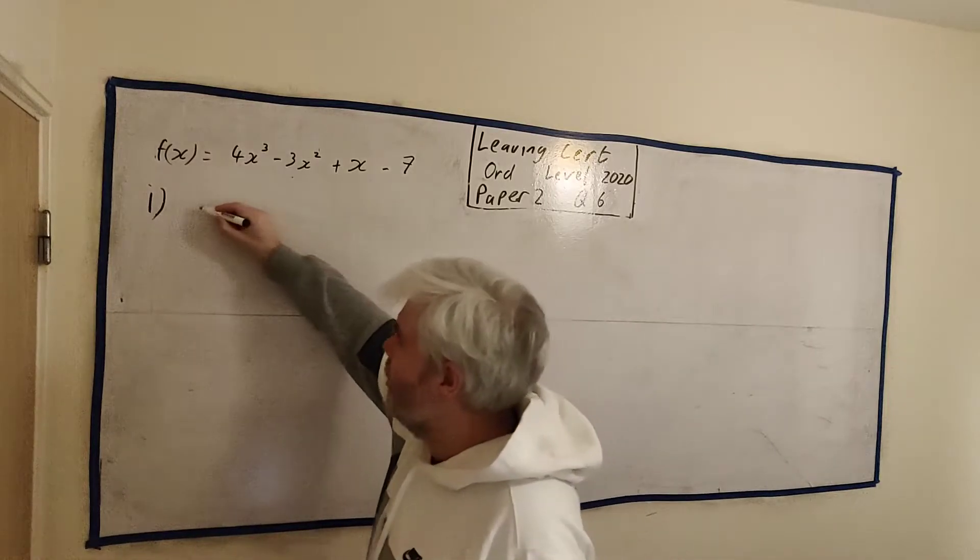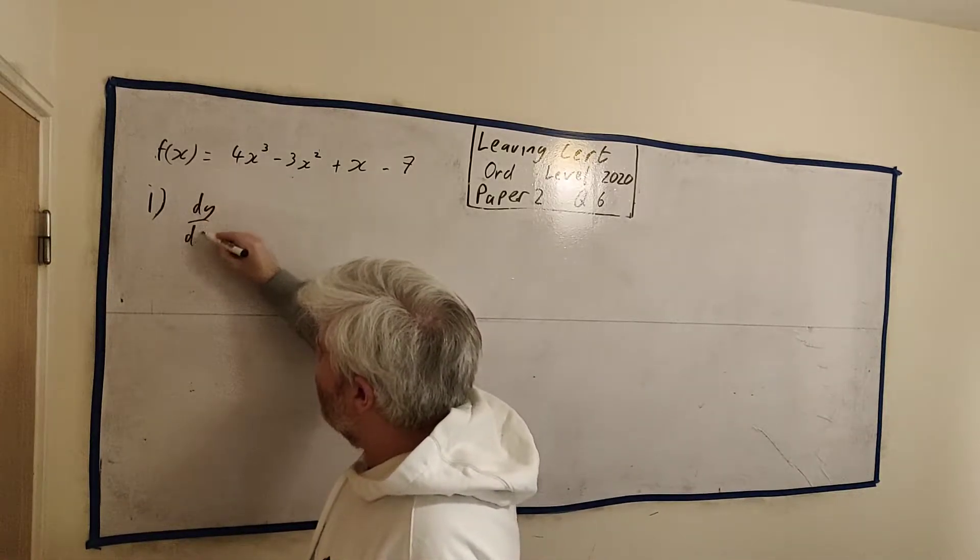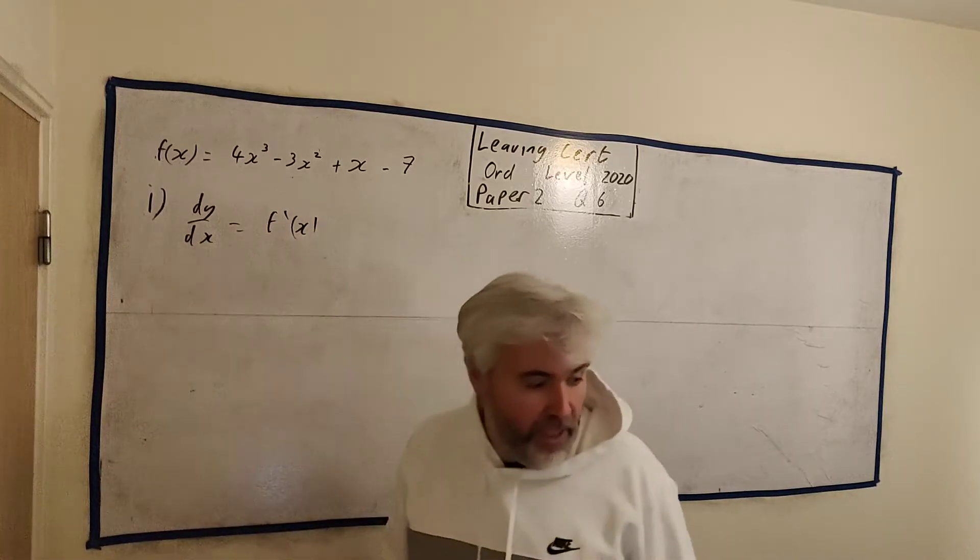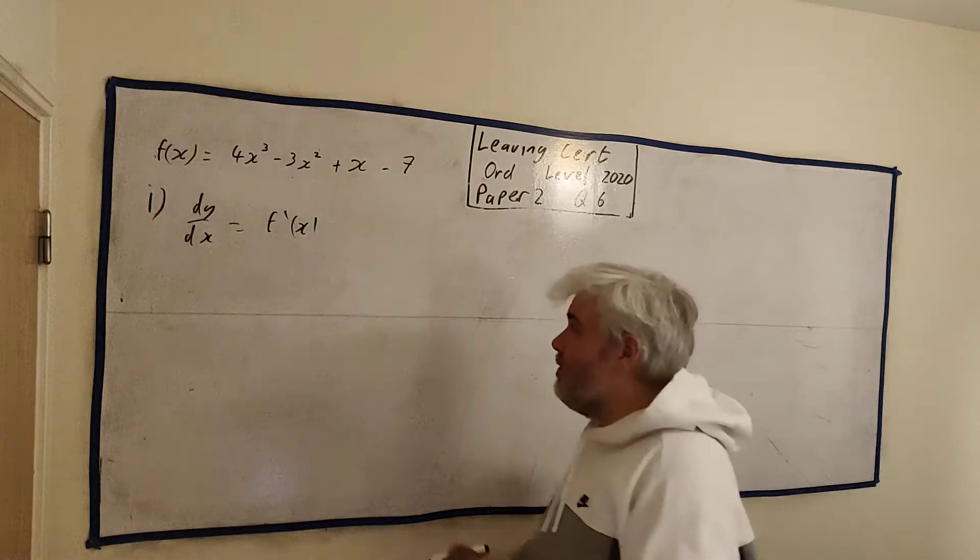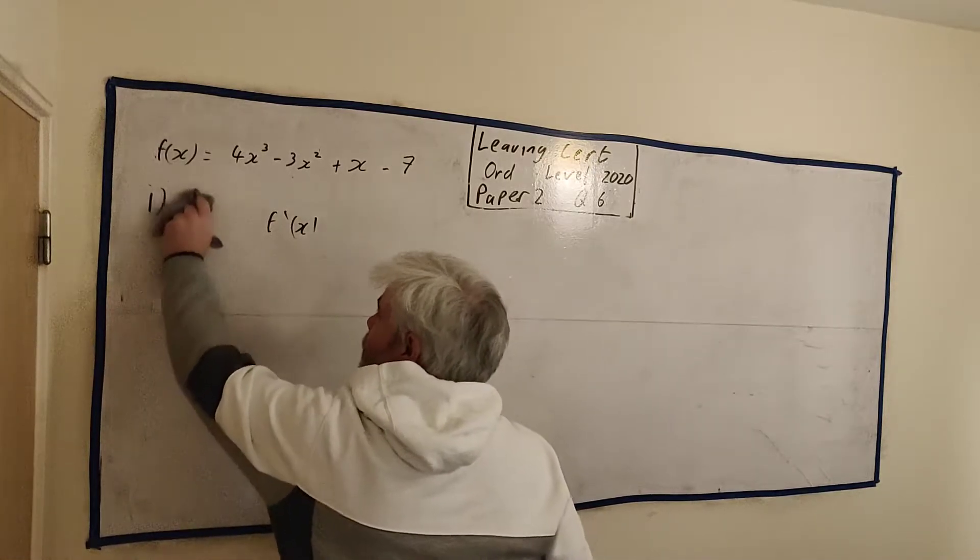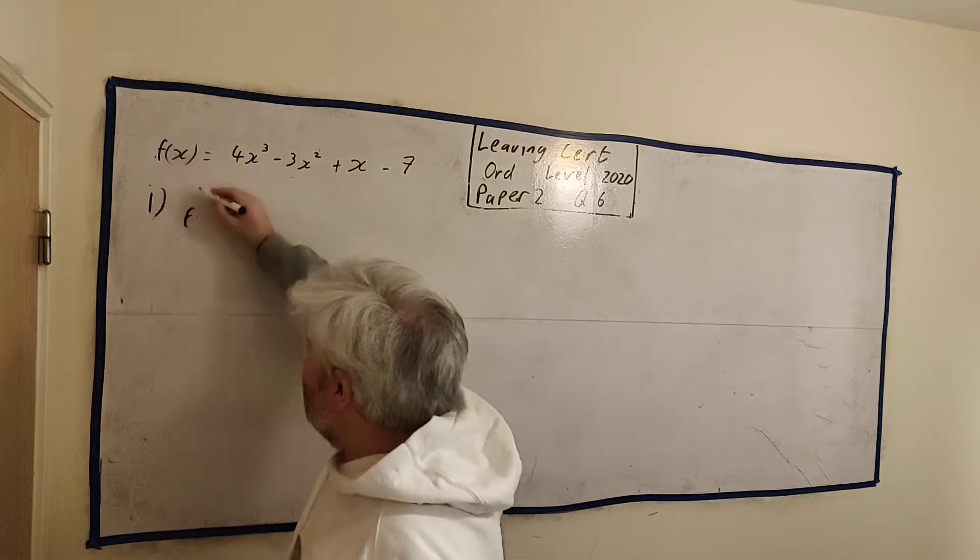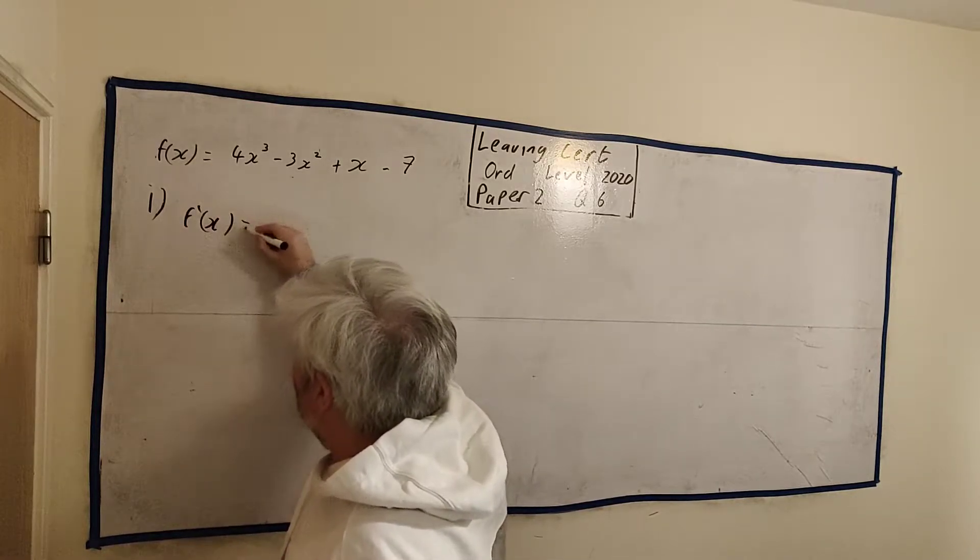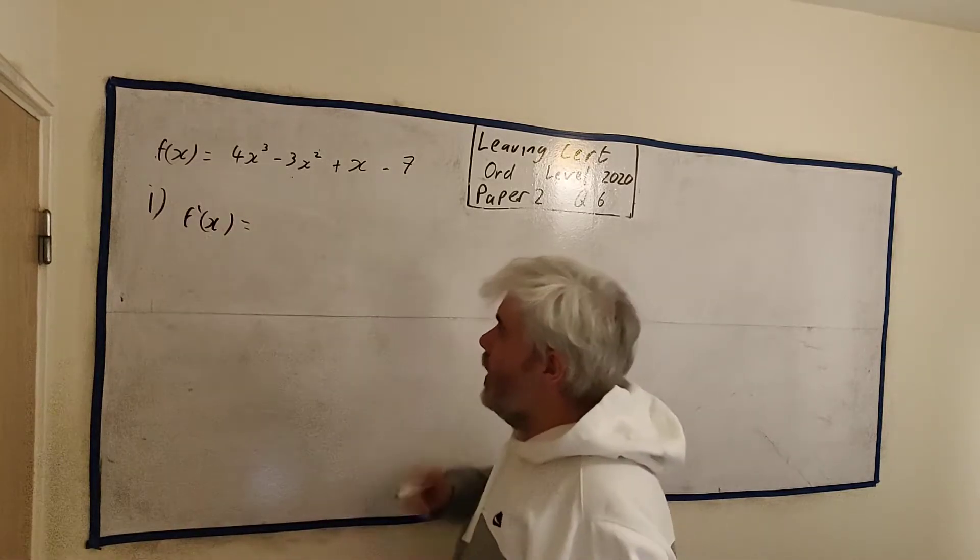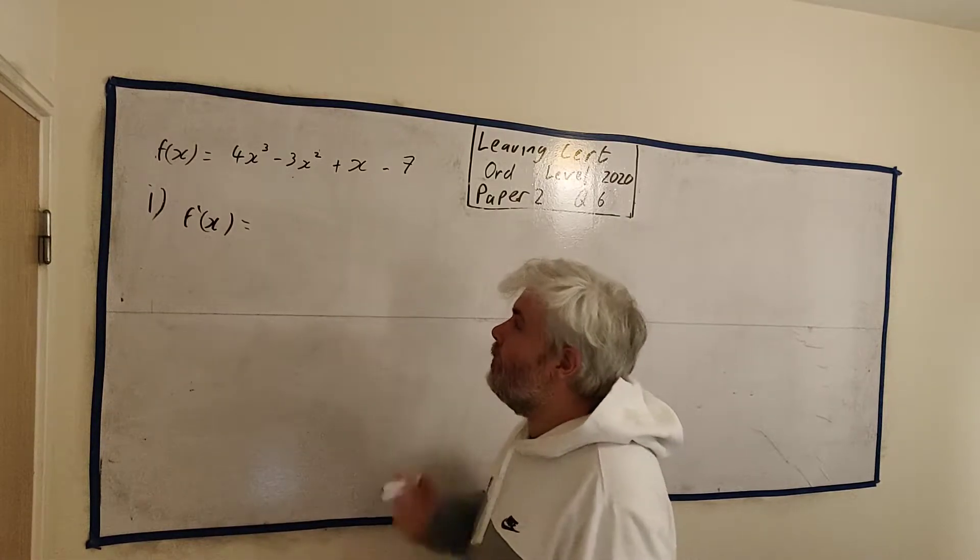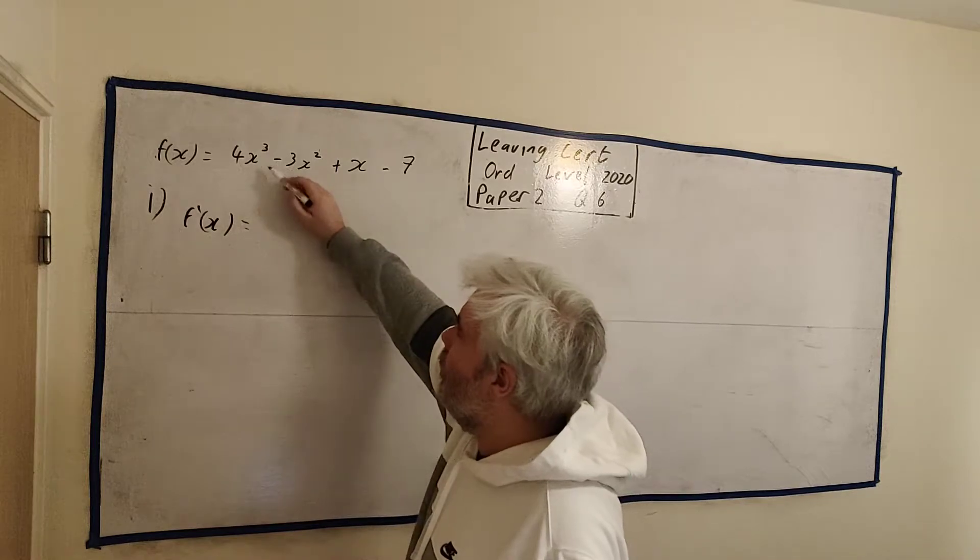It has three of its own subparts. Part 1 simply asks you to differentiate this. Now, we often write differentiate dy/dx, and the other way we write it is f'(x). In this case, we're going to use f'(x) because they gave us f(x), so let's write f'(x).